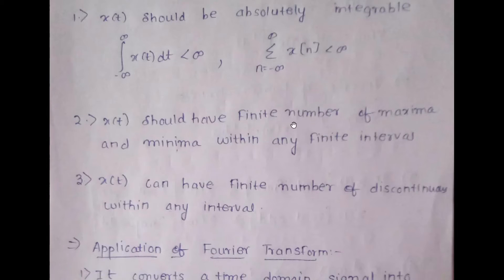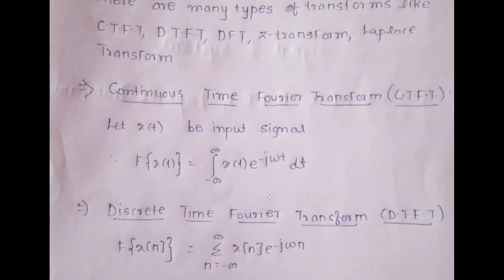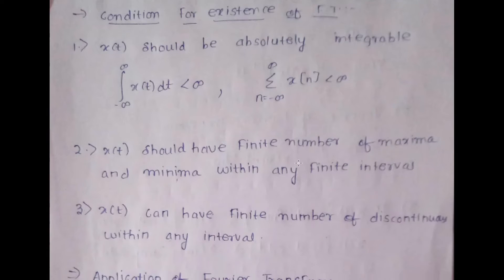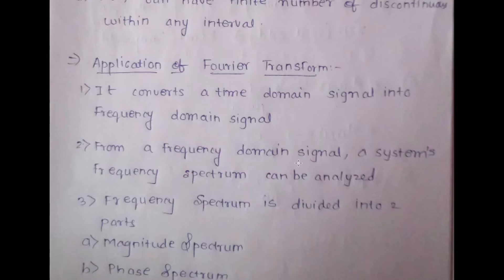The second condition is that x(t) should have a finite number of maxima and minima within any finite interval. The third condition is that x(t) can have only a finite number of discontinuities within any interval. So the conditions for CTFT to exist are: absolute integrability, finite maxima and minima, and finite discontinuities within any interval.